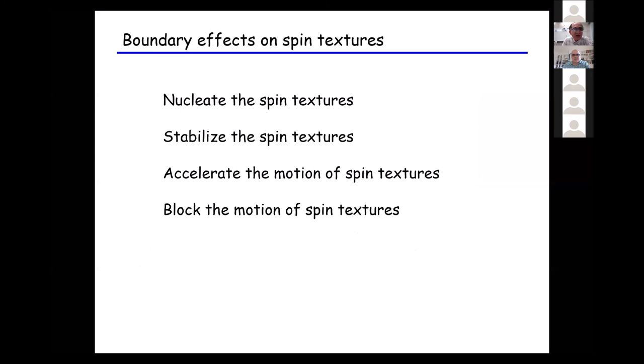I have listed four aspects of boundary effects on the spin textures. First, near the boundary we have nucleation of spin textures. Second, sometimes particular spin textures are stabilized by the boundary. Third, sometimes acceleration of the motion of the spin texture appears near the boundary. And on the other hand, blocking of the motion of the spin texture also occurs at the boundary. I would like to discuss these four items from the viewpoint of theory.